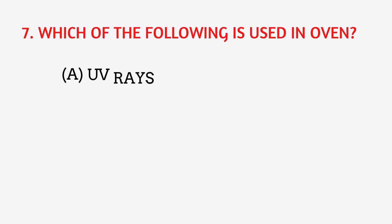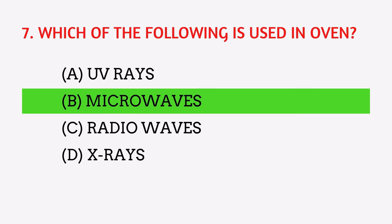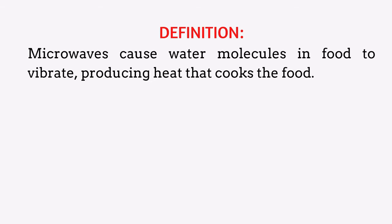Which of the following is used in an oven? The answer is microwaves. Microwaves cause water molecules in food to vibrate, producing heat that cooks the food.